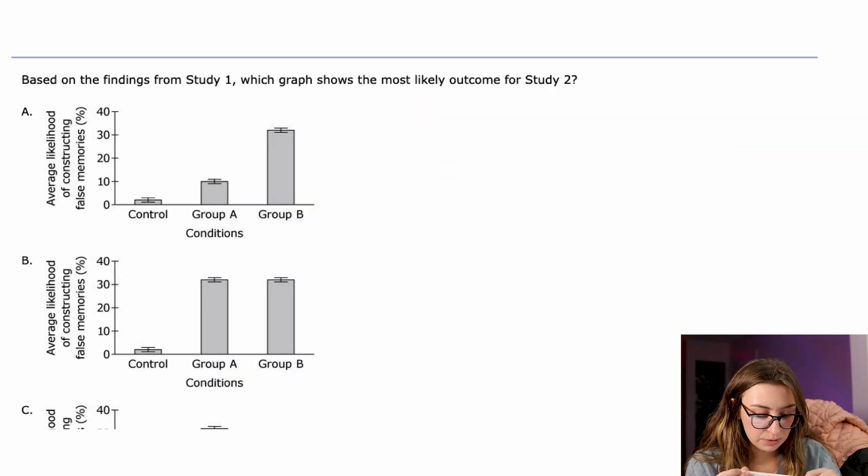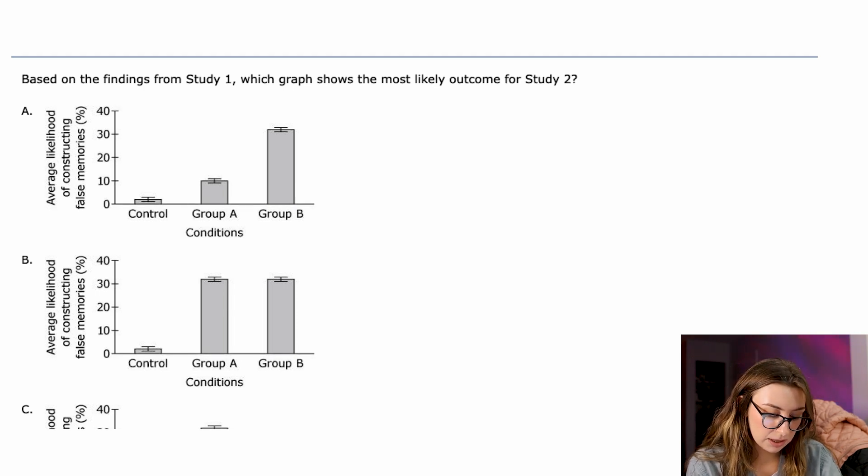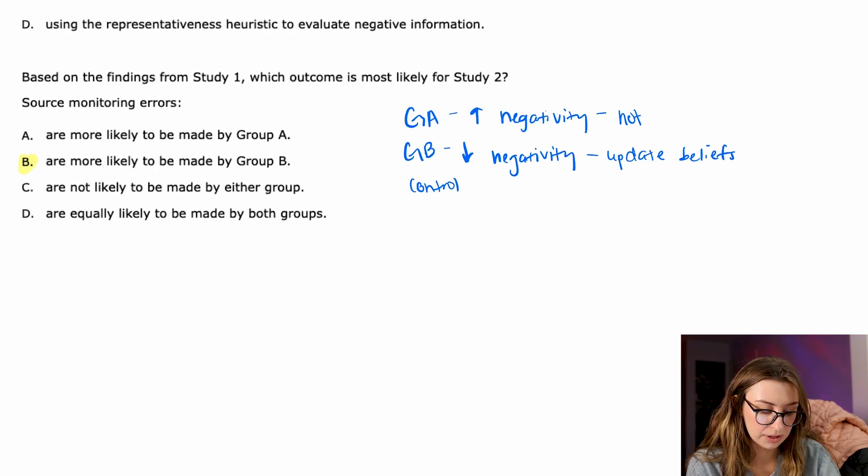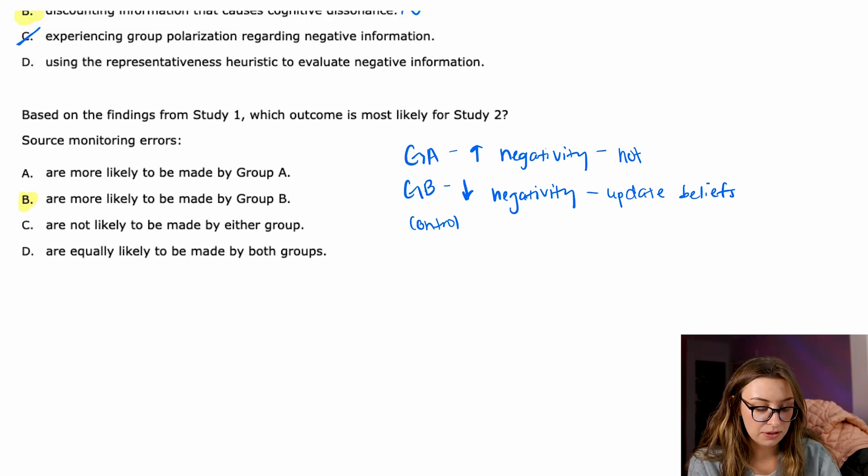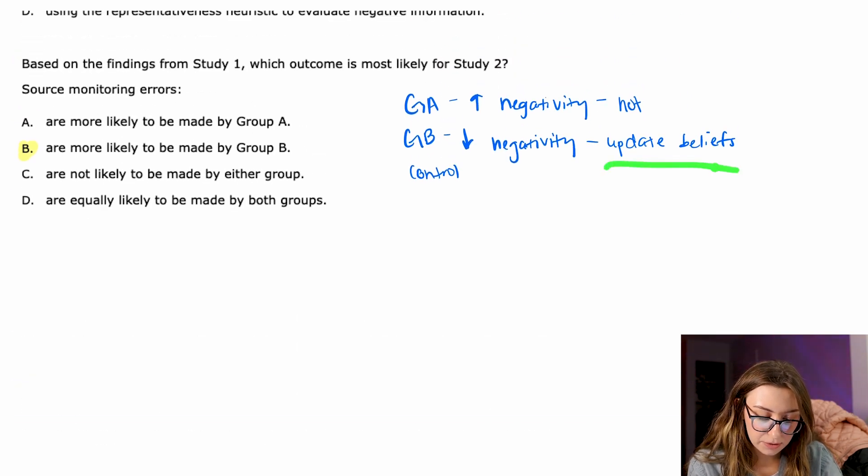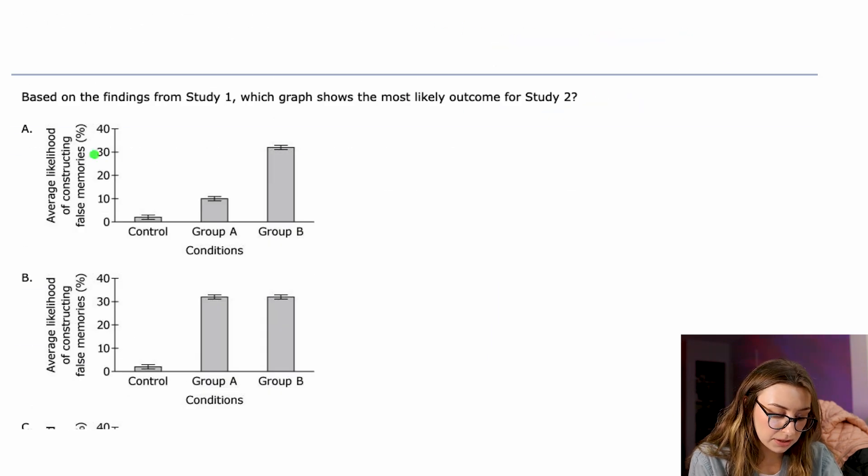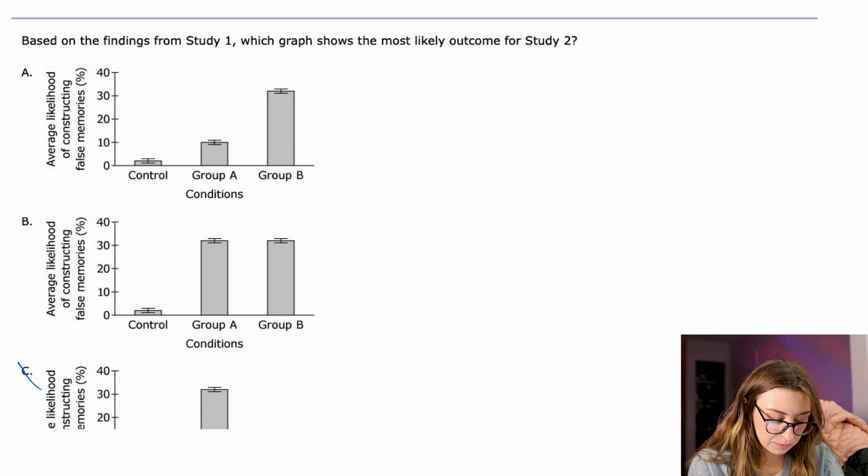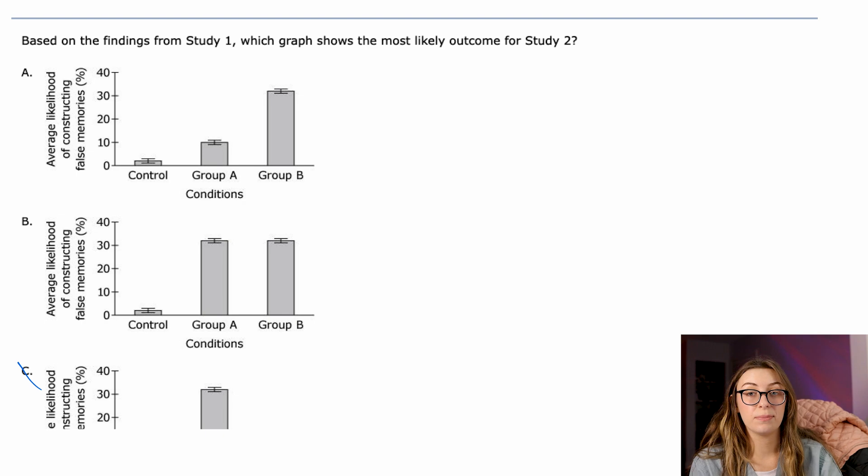Based on the findings from Study 1, which graph shows the most likely outcome for Study 2. The y-axis is average likelihood of constructing false memories. So again, that's going to be sort of like source monitoring errors. So luckily, if you got this question right, then you'll probably get this question right. So we know that Group B is going to be updating their beliefs, they're making the source monitoring errors, so they are going to be constructing false memories. So anything that has Group B having less false memories than anything else is automatically wrong. And then answer choice B, also, they're not going to have the same as Group A, because Group A was not likely to update their beliefs, right? They kept their memories of the original car accident. So A is correct.